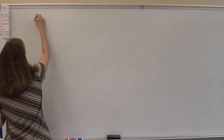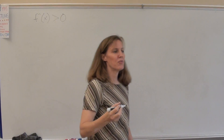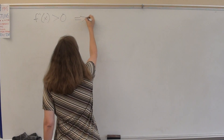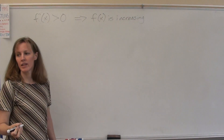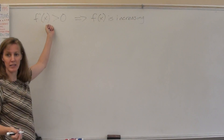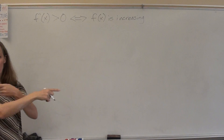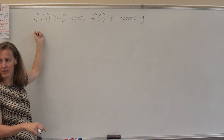So here's the thing. If f prime is positive — greater than zero — this implies that f is increasing. Now, is the converse also true? If the function is increasing, does that mean the derivative is positive? Yes. Which makes this a bi-conditional statement — works in both directions. A positive derivative implies the function is increasing, and an increasing function implies the derivative is positive.